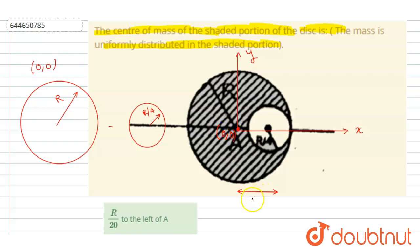So this distance will be R minus R by 4. So it is 3R by 4. Since this distance is R by 4, if I write down the coordinate of this, it is (3R by 4, 0).